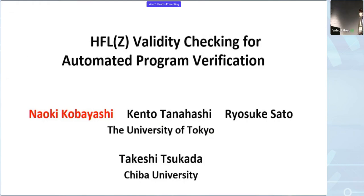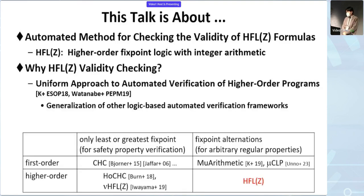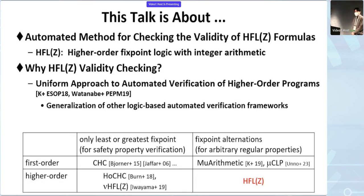This talk is about an automated method for checking the validity of formulas of higher-order fixed-point logic, called HFG. This is interesting because it provides a uniform approach to automated verification of higher-order programs, as various verification problems for higher-order programs can be naturally reduced to the HFG validity checking problem. This can be considered a generalization of other logic-based automated verification frameworks such as constrained Horn clauses.